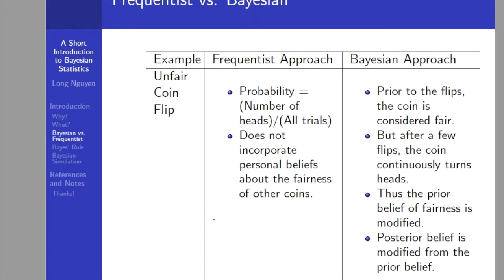In particular, the individual running the experiment does not incorporate his or her own beliefs about the fairness of other coins. On the other hand, on the Bayesian side, prior to any flip of the coin, a person may believe that the coin is fair. After a few flips, the coin continually comes up heads, thus the prior belief about fairness of the coin is modified to account for the fact that, for instance, three heads have come up in a row, and thus the coin might not be fair. After 500 flips with 400 heads, the person believes that the coin is very unlikely to be fair. The posterior belief is heavily modified from the prior belief.